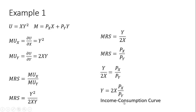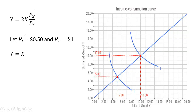Let's go ahead and graph the income consumption curve. Holding prices fixed, let's say the price of good x is 50 cents and the price of good y is $1. Making those substitutions into the formula, it simplifies down to y equals x — a ray from the origin with a slope of 1. The utility maximizing consumption bundles fall along this income consumption curve depending on the level of income.